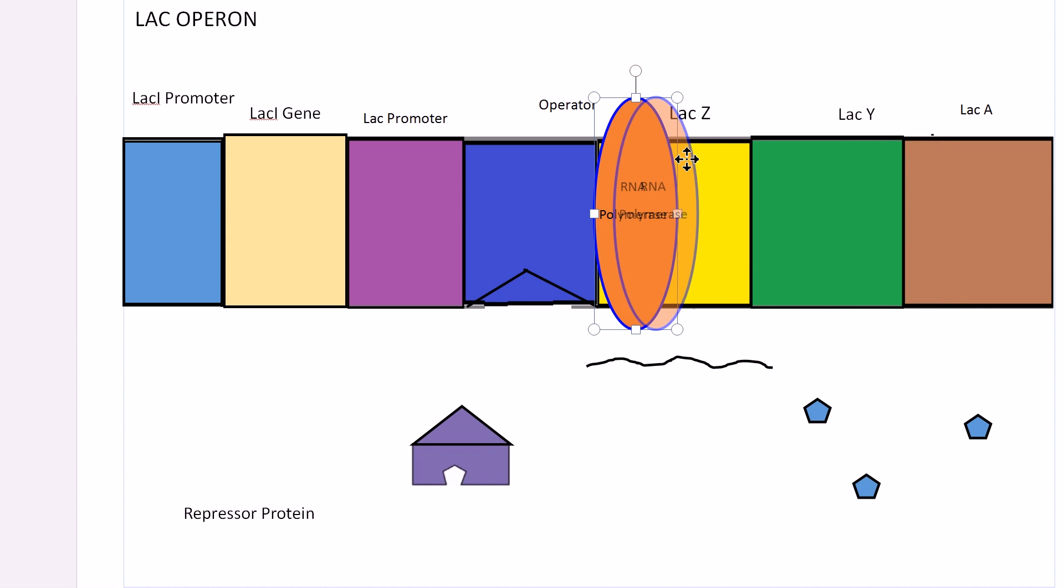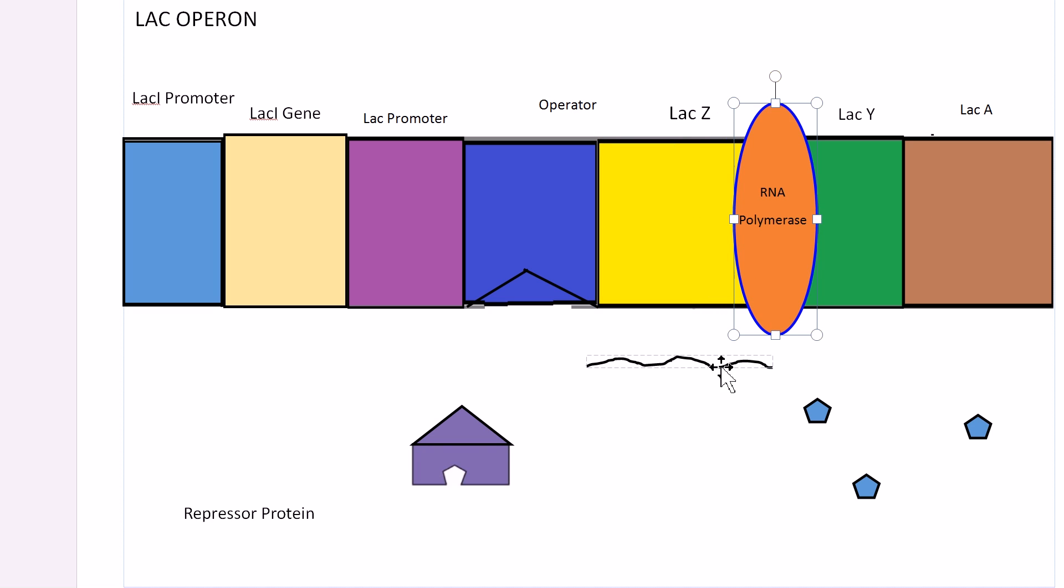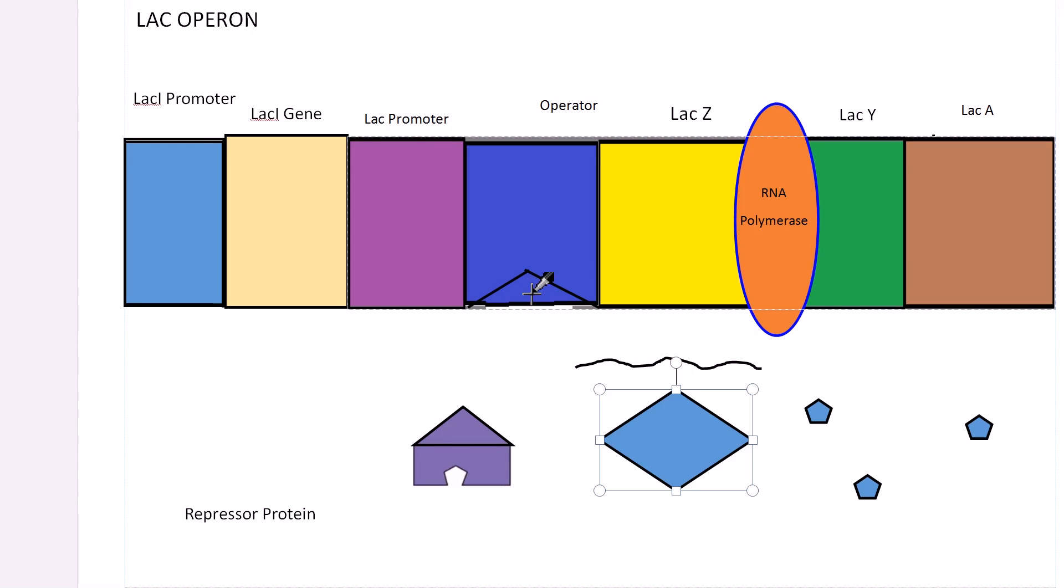When RNA polymerase transcribes the lac Z gene, mRNA is made. This mRNA makes the protein beta-galactosidase, which breaks lactose down into glucose and galactose. Our lactose are going to be broken down by beta-galactosidase as shown.